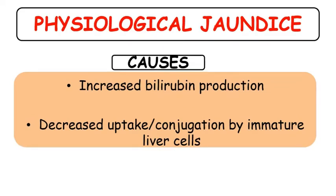The causes of physiological jaundice are usually two. One is increased bilirubin production, and second is decreased uptake and conjugation by immature liver cells. RBCs are damaged more in newborn babies because their lifespan is 90 days, leading to increased bilirubin production. On the other hand, the liver is very immature — there is decreased uptake of unconjugated bilirubin by ligandins, and less activity of glucuronyl transferase enzyme.